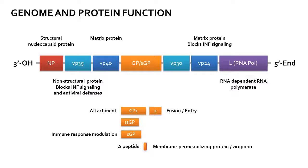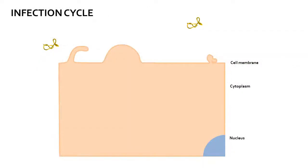In addition, the virus genomically encodes an RNA-dependent RNA polymerase and has been suggested to produce an array of 10 to 12 computationally predicted microRNAs with a potential role in promoting virulence. The virus enters the cell via receptor-mediated endocytosis by binding to TIM1, also known as HAVCR1.